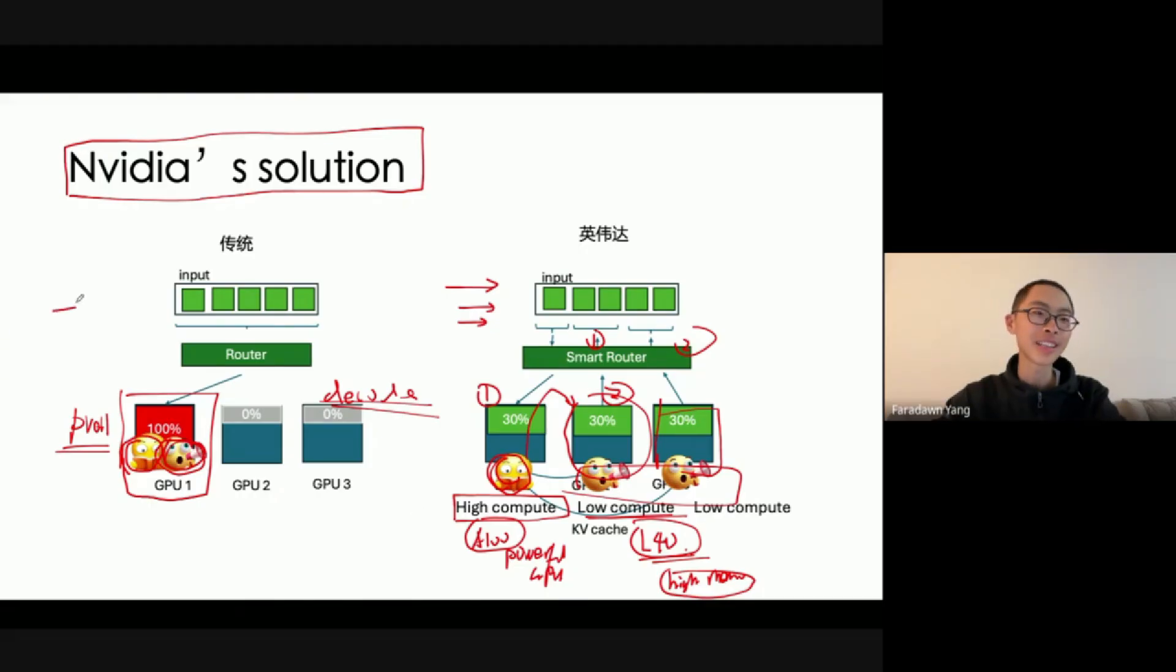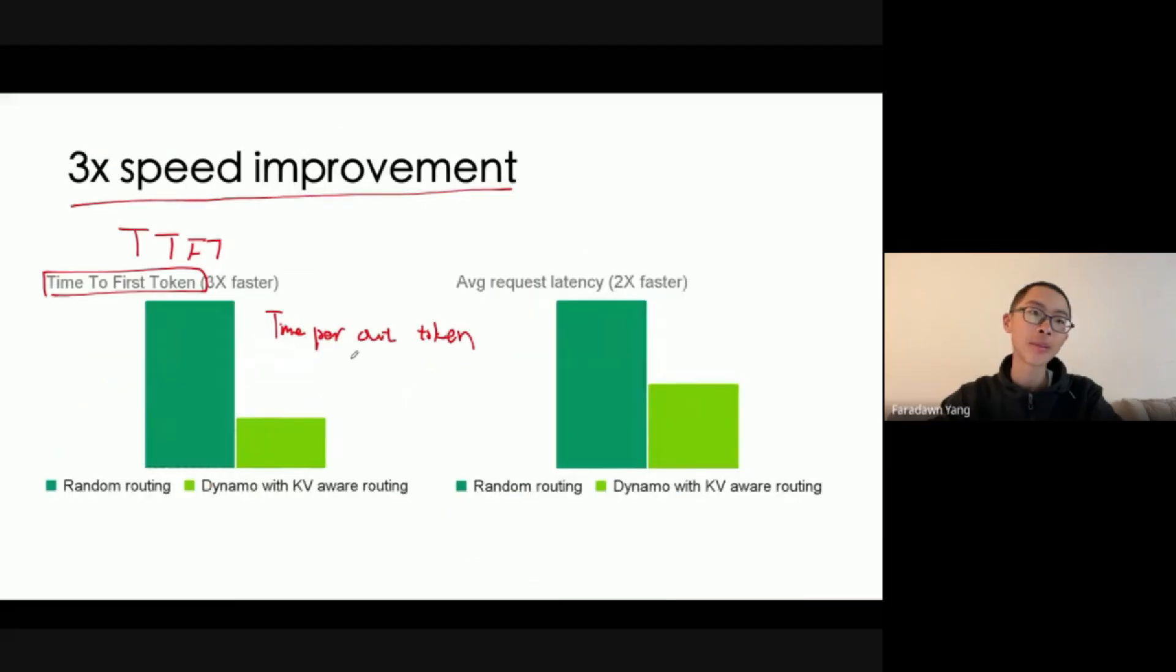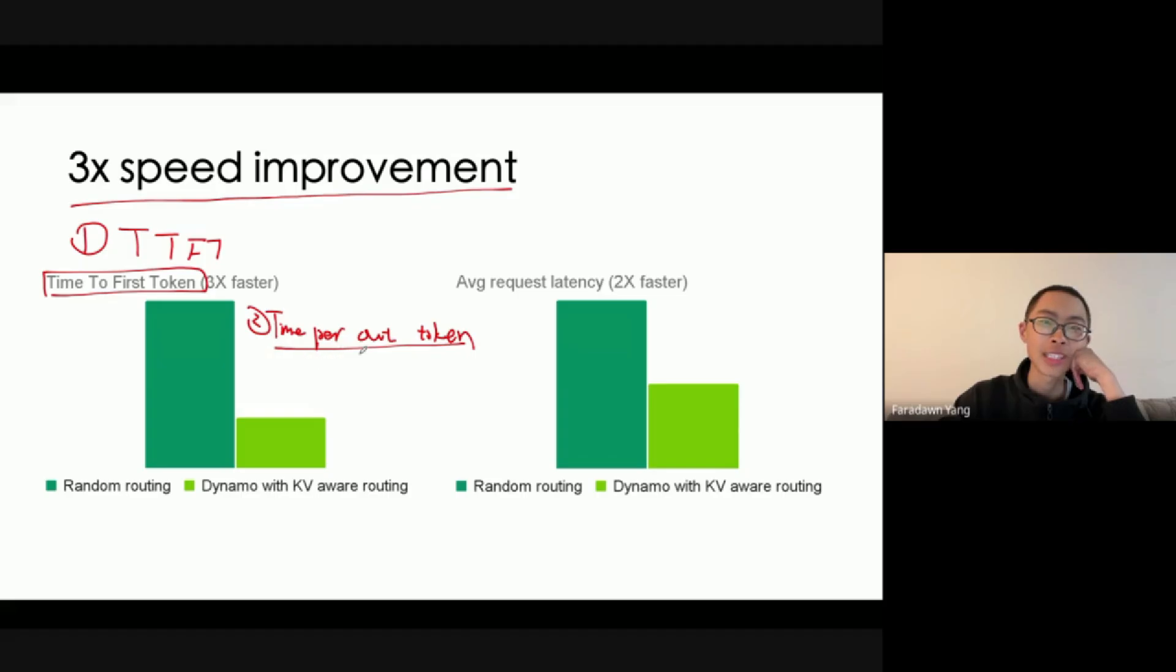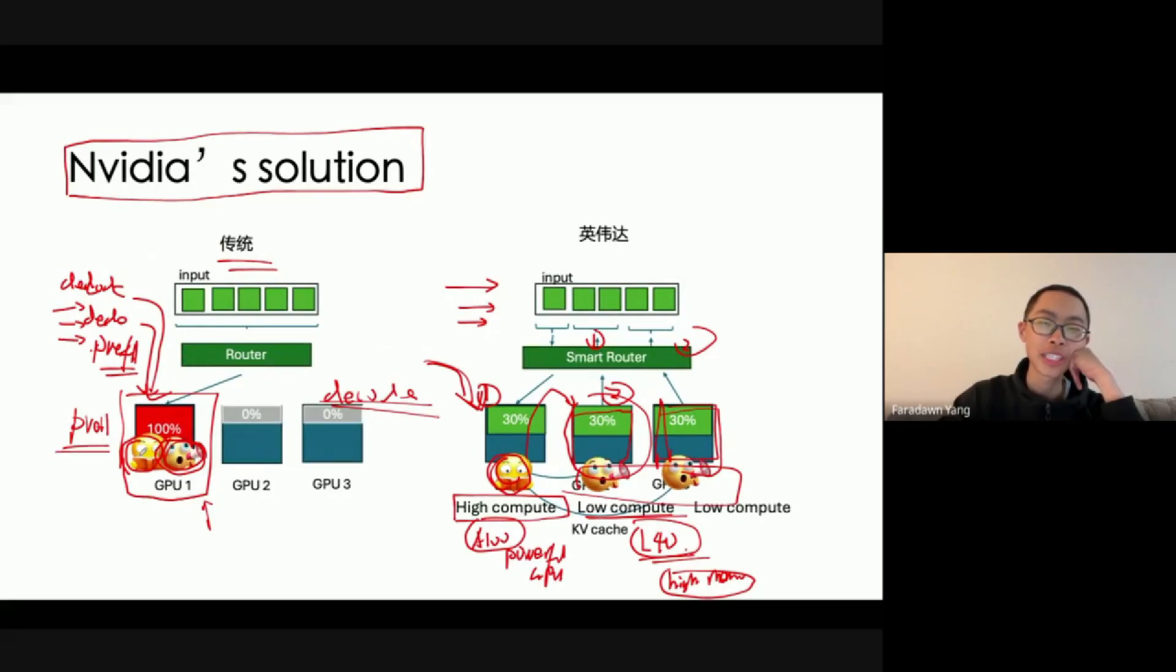Imagine there are three requests. Some requests are decode only requests. In the normal traditional one, the decode will saturate the GPU and the prefill will have to wait. But here, if we disaggregate them, the decode can be processed by the other two and the prefill can just start immediately. So you are very right that time to first token is dependent only on the prefill, but if we decode and prefill in the same instance, they can interfere with each other's performance. The time here is calculated when you have a large number of consecutive requests.